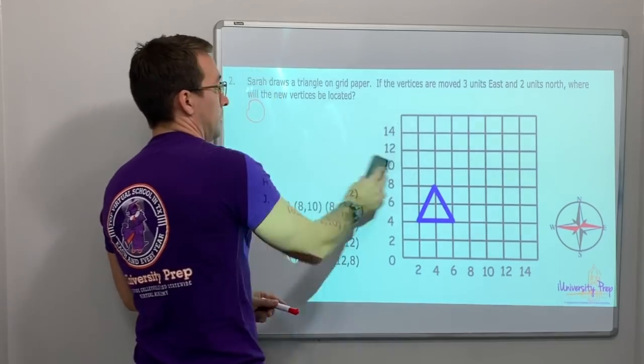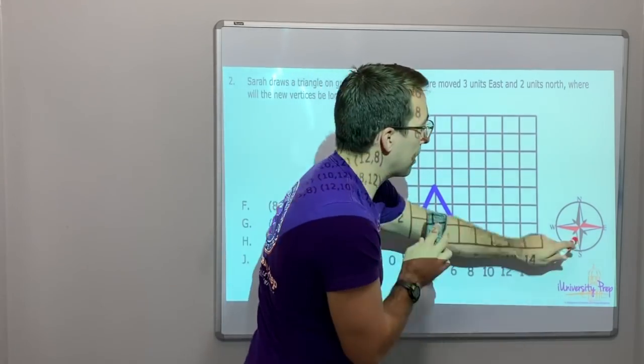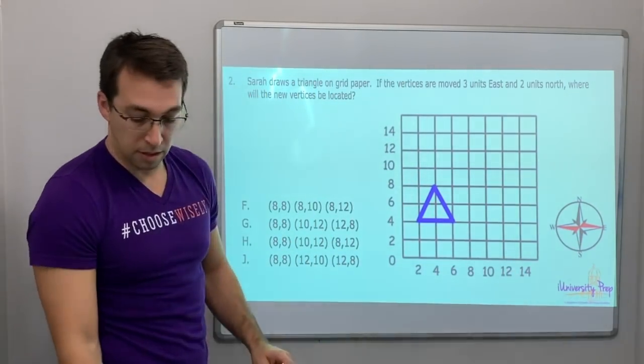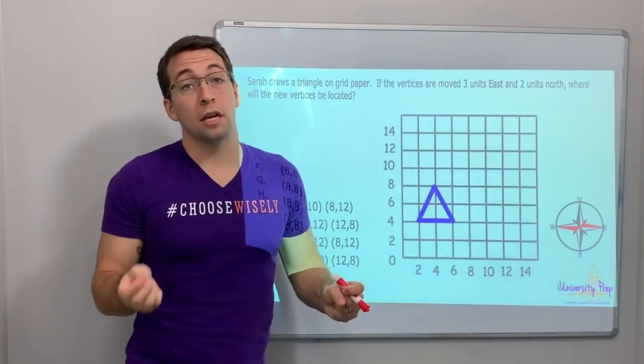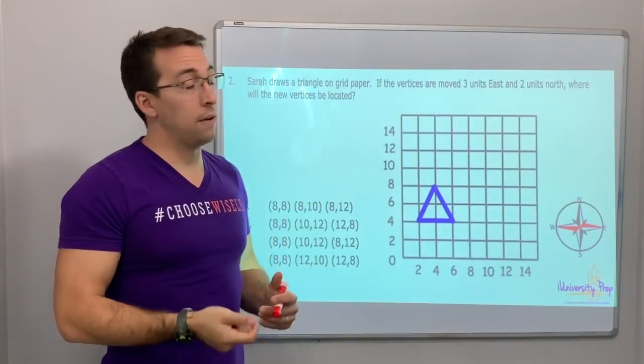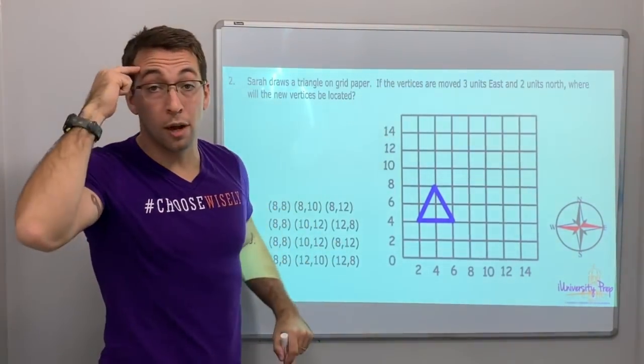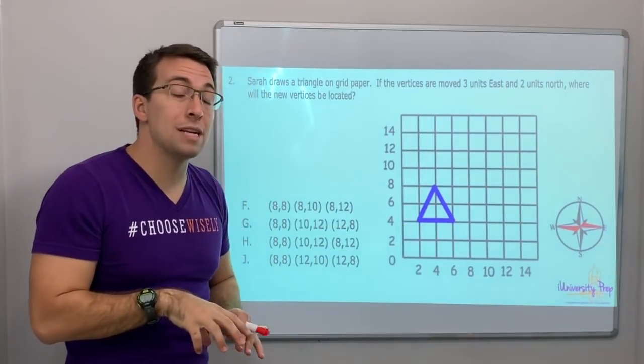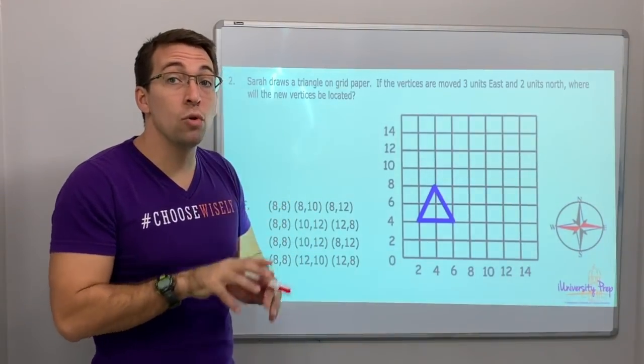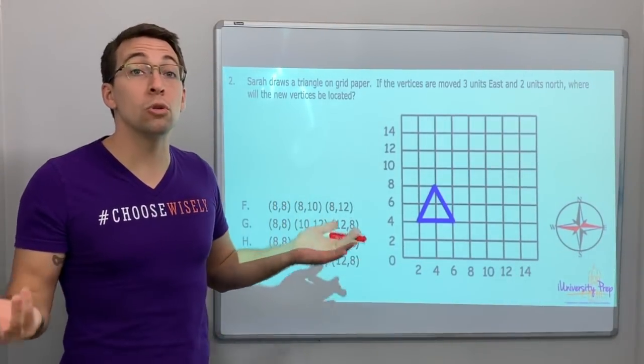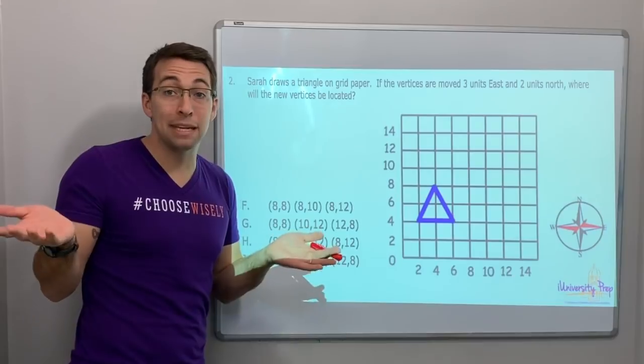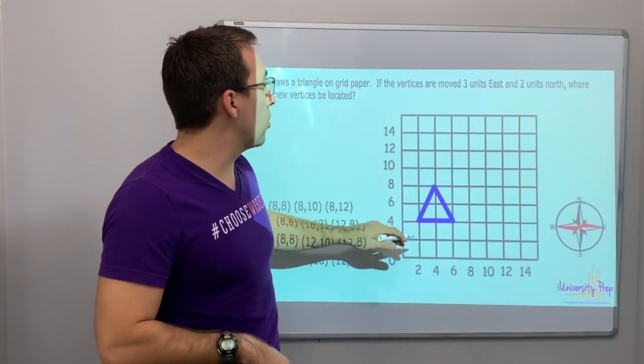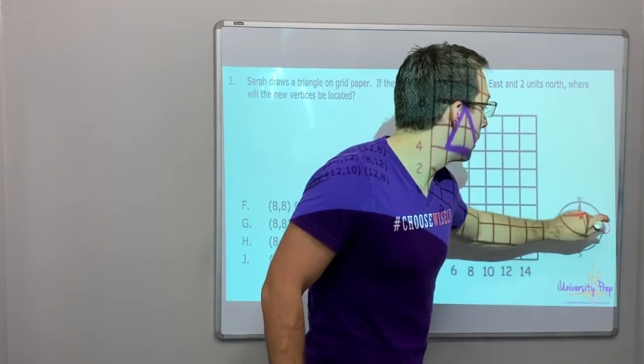Alright, number two. Again, look at our compass. We've got a compass, so we've got to know what that is. Sarah draws a triangle on a grid paper. Okay? If the vertices, geometry vocabulary, the vertices are the points.